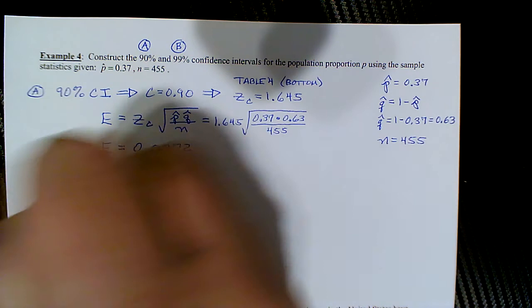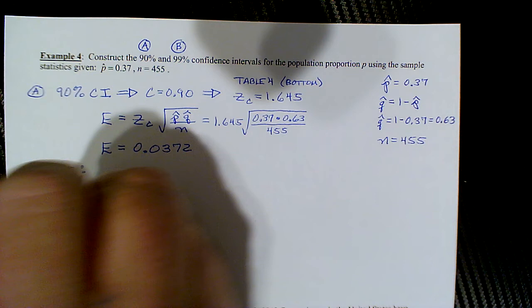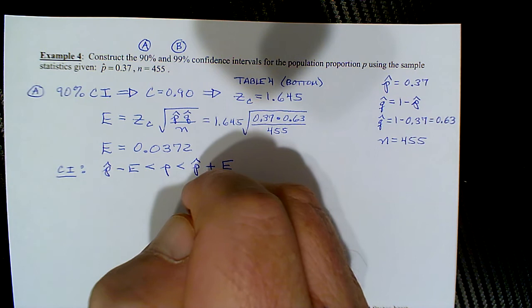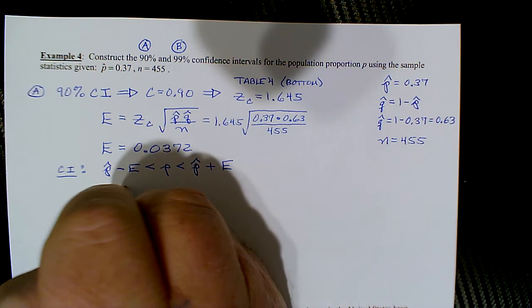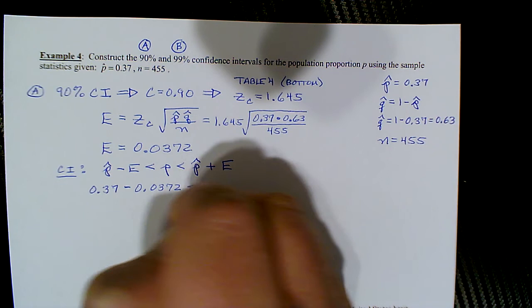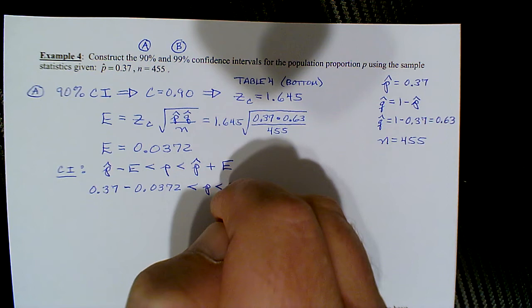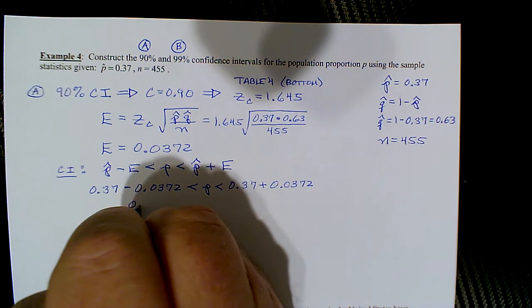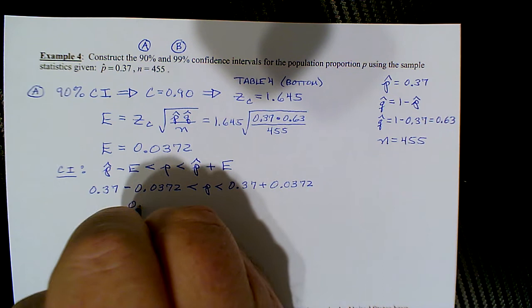For the 90% confidence interval, we have p-hat minus E < p < p-hat plus E. So 0.37 minus 0.0372 < p < 0.37 plus 0.0372, giving us 0.3328 < p < 0.4072.